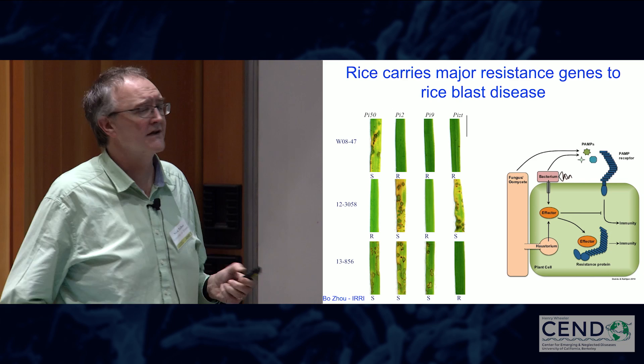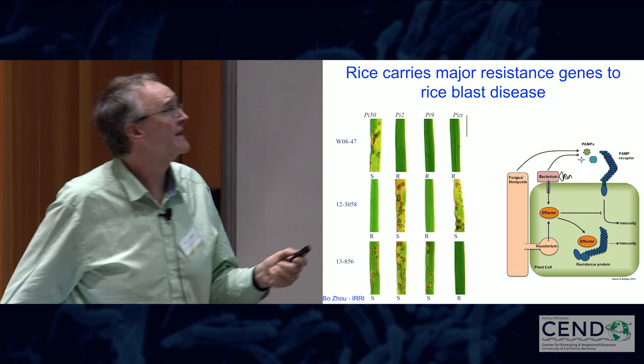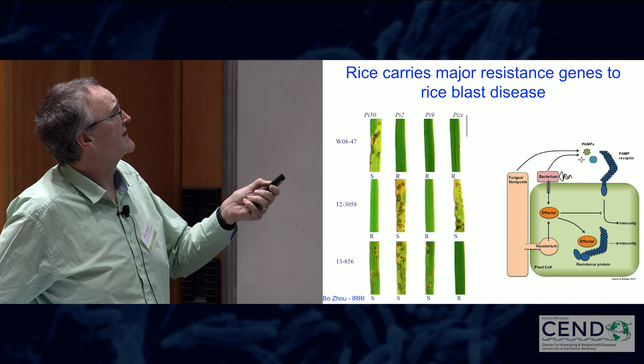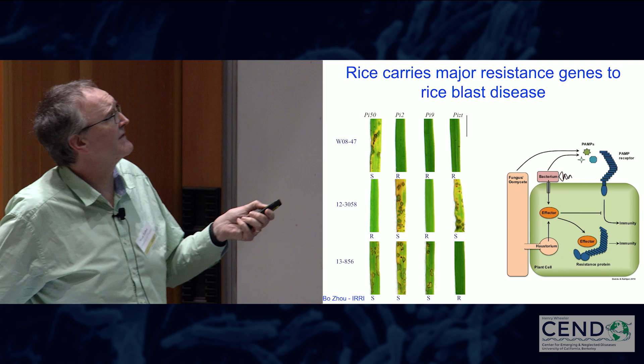For instance, this rice blast isolate is able to cause disease on a rice cultivar with resistance gene PI50, but unable to cause disease on PI2, PI9, and PIZT — which means it must have the corresponding avirulence genes, the effectors recognized by those immune receptors. If we can understand the prevailing rice blast population, it should tell us something about the types of resistance genes which would provide durable resistance in Africa. You'll hear more about the molecular mechanisms in the next talk.